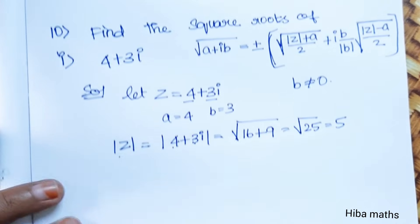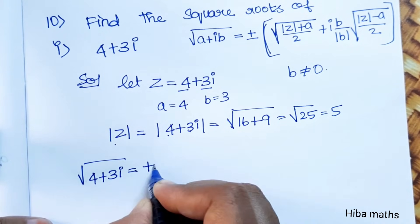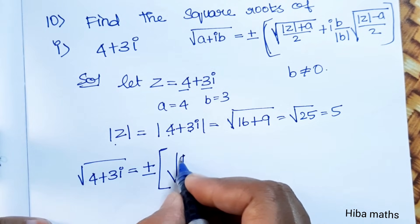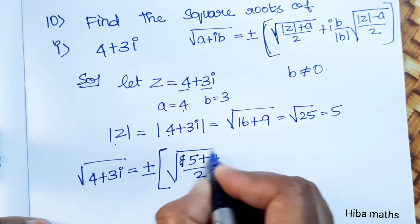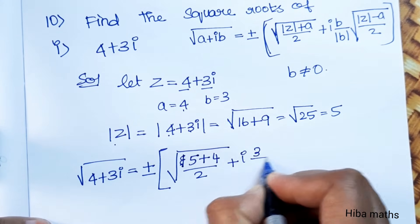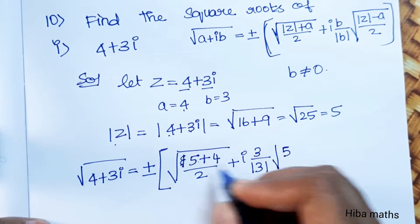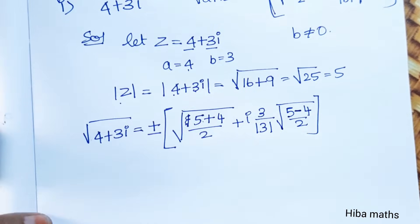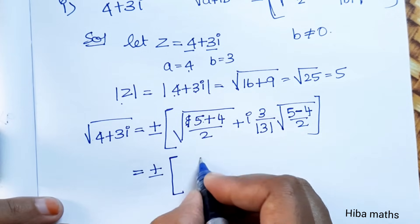Mod z = 5. Substituting into the formula: root of (4 + 3i) is equal to plus or minus root of (5 + 4) / 2, plus i times (b value 3 / mod 3) times root of (5 - 4) / 2. That gives root of (9 / 2), plus i, and root of (1 / 2).